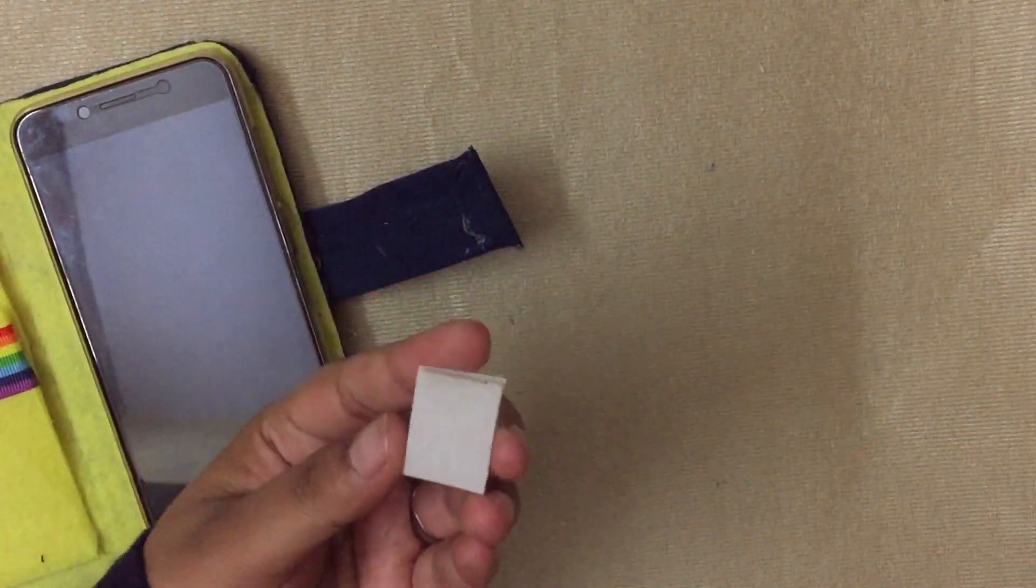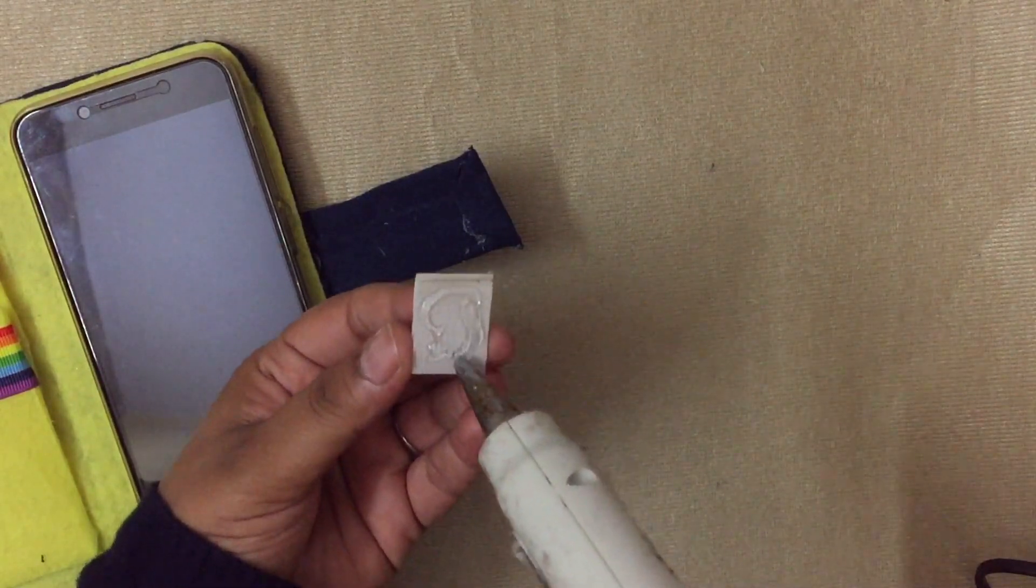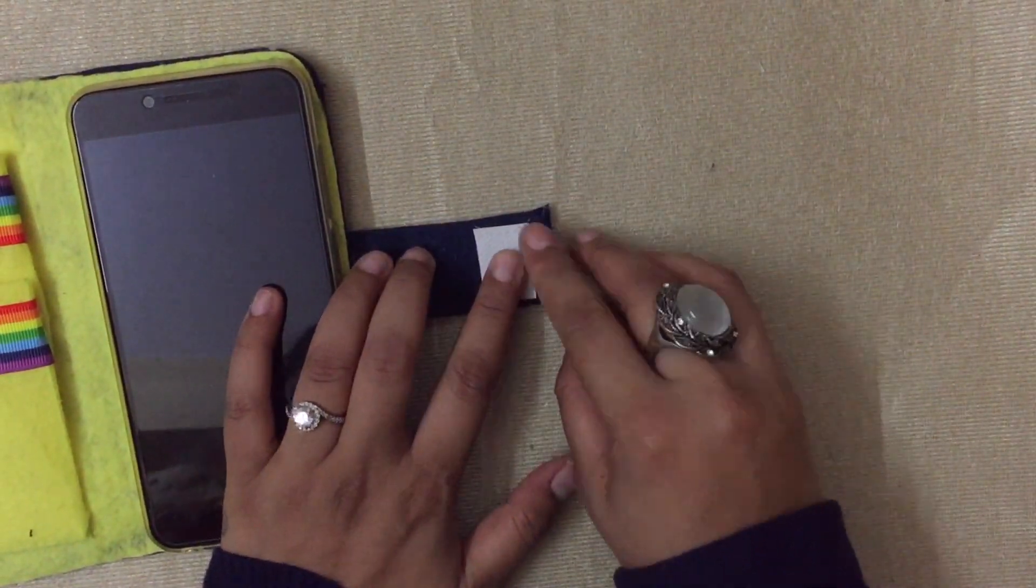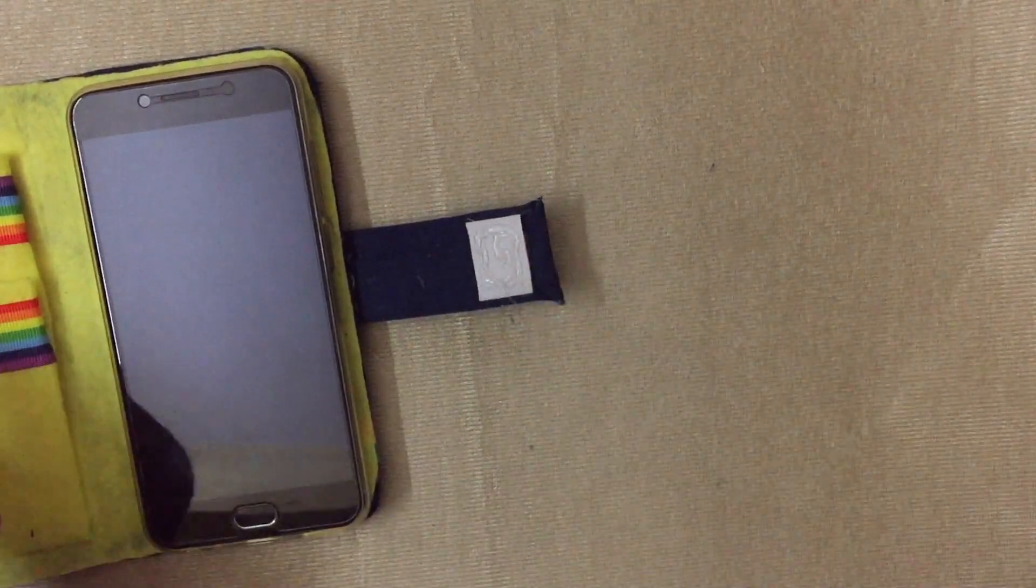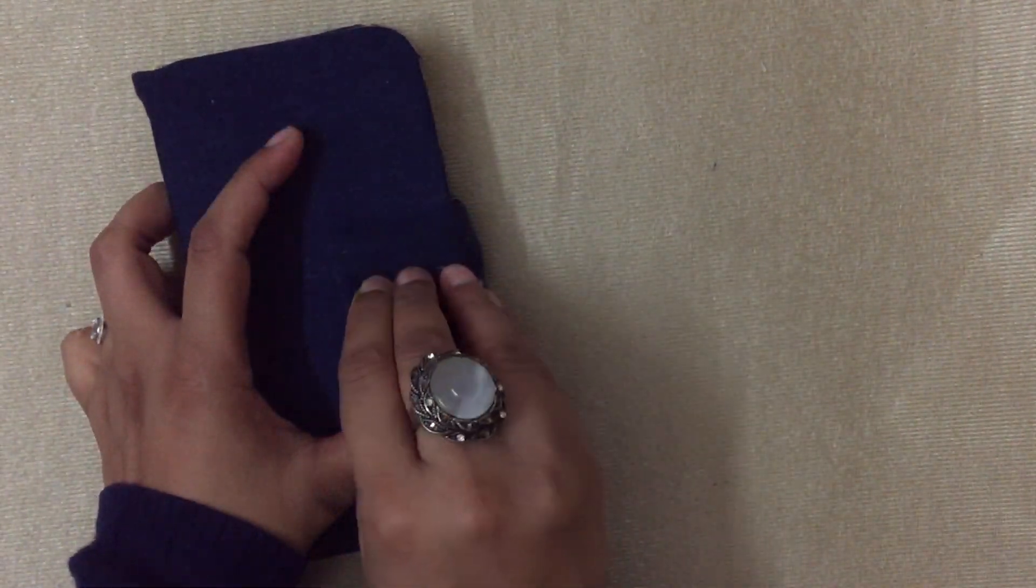Once done, you need a piece of velcro. Glue it to the flap like so. Glue the other side to the front piece like so.